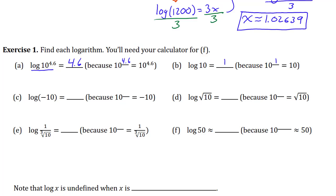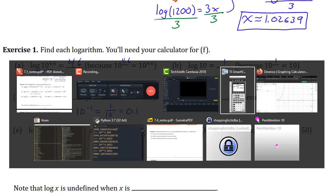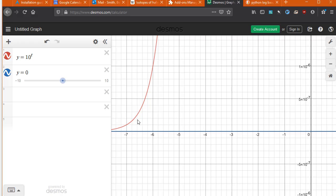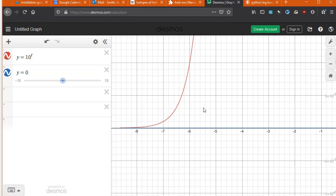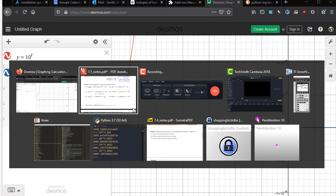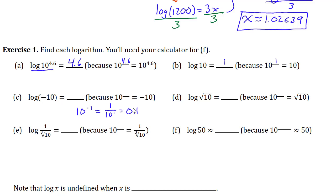What power of 10 gives you negative 10? Maybe you're thinking negative 1? Well, 10 to the power negative 1 is just 1 divided by 10 to the 1 — it's just 0.1. So that's not negative 10. It turns out this is impossible. We saw from the graph before that the result of an exponent like 10 to the power t is always a positive number — it's never 0 and it's never negative. So this is undefined.